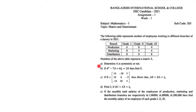Question E states that the monthly total salaries of employees in the production, marketing, and distribution branches are respectively given, and we have to determine the monthly salary of an employee for each of Grade 1, 2, and 3. I mark the grade salaries as x, y, and z, put them in a matrix, then express the total monthly salary for each grade to form the equation AX = B.